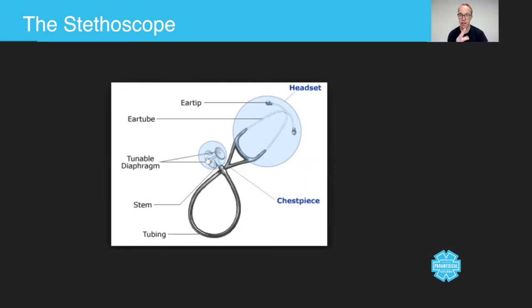They're used for listening for different types of sounds. And with both of these, the bell and the diaphragm, the harder you press on the patient's chest, the more you're going to hear. And that's basically it. So you've got your ear tips, your ear tubes, this is just a piece of metal or aluminium, you've got your tubing and the diaphragm and bell.